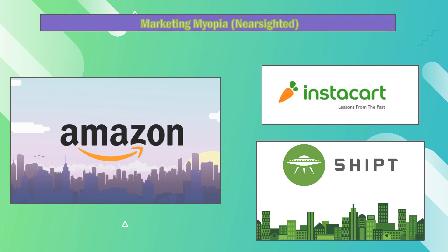However, recently same-day grocery delivery services have emerged, such as Instacart and Shipt. These companies can provide many of the same products that Amazon does, but without the mailing and shipping process. Same-day grocery delivery services can have your items delivered to you in under an hour, and from stores other than just grocery stores, extending to places like pharmacies or pet supply stores.